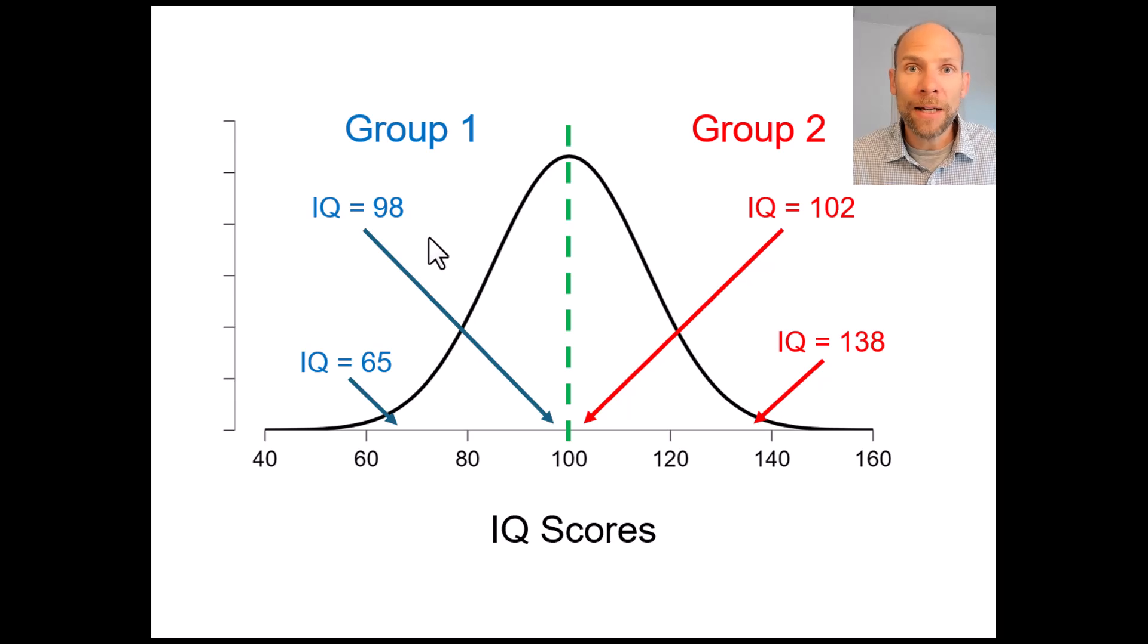Also we would make a lot of errors potentially because statistically speaking a score of 98 versus a score of 102 which here would end up in different groups may not be statistically different from one another due to measurement error.